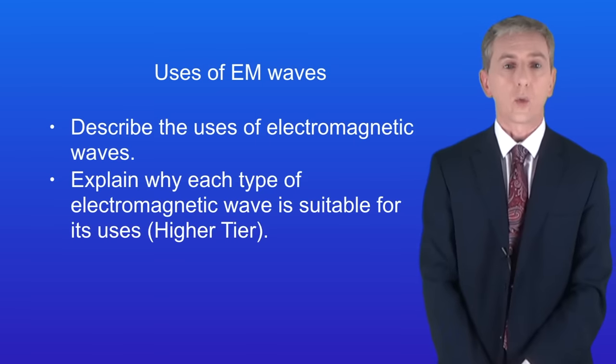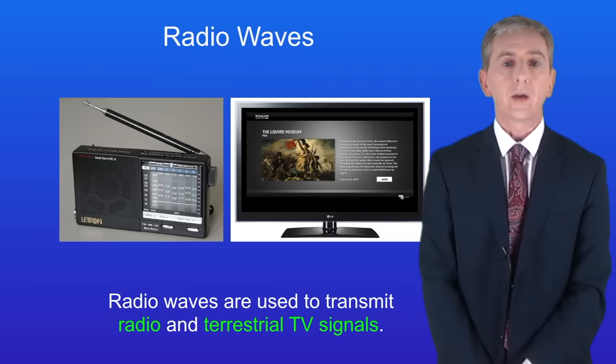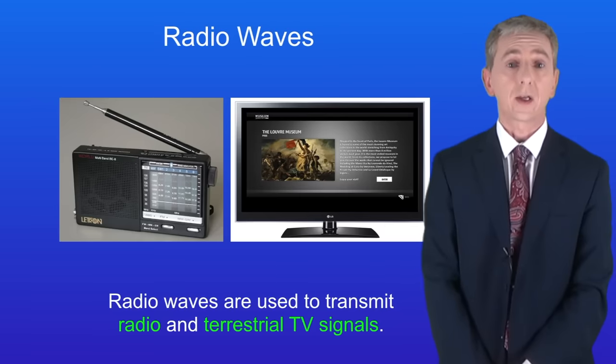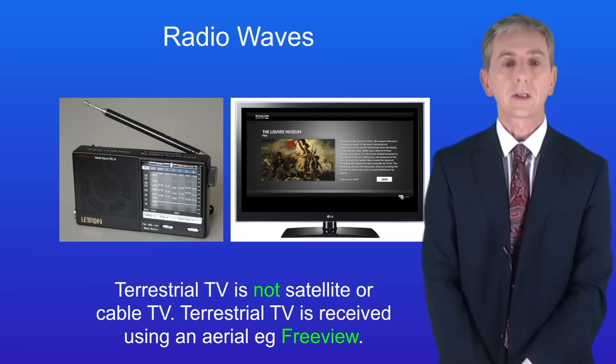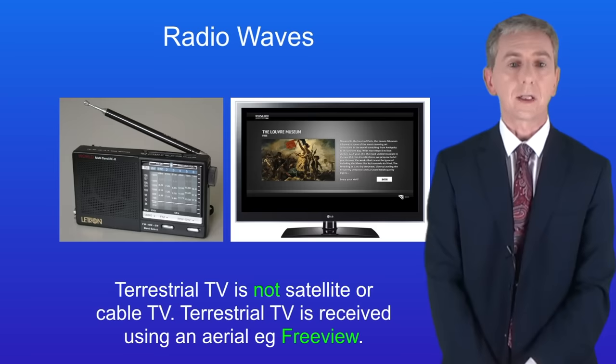We're going to start with radio waves. Radio waves are used to transmit both radio signals and terrestrial TV signals. Remember that terrestrial TV is not satellite or cable TV. Terrestrial TV is received using an aerial, for example freeview.